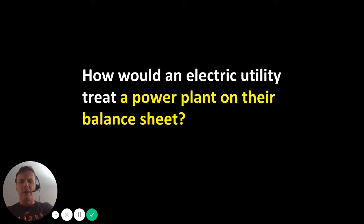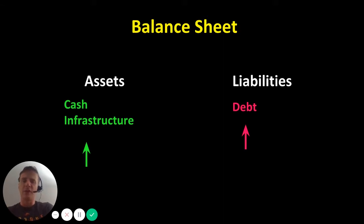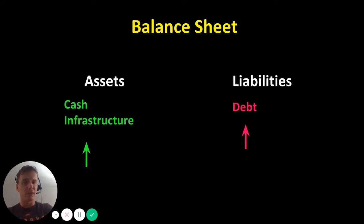How would an electric utility treat a physical power plant on their balance sheet? It would show up in two different places. A power plant is an asset — it has value because it can produce electricity that a utility can sell. So infrastructure ends up on the asset side. It would also potentially show up on the liability side as debt — money the company borrowed in the past to pay for the construction of the power plant.